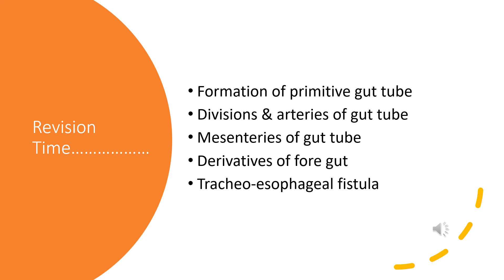We have come to the end of the first module on the development of the gastrointestinal tract. To revise: we have seen the formation of the primitive gut tube, its divisions, the arteries supplying those divisions, the mesenteries associated with the developing gut tube, the derivatives of the foregut, and the development of the esophagus along with its important congenital anomalies — especially tracheoesophageal fistula. In the next class we will see the development of the rest of the organs from the foregut. Thank you.